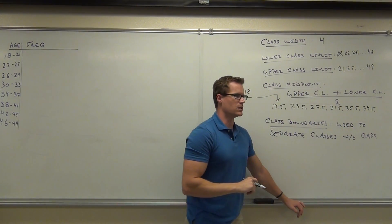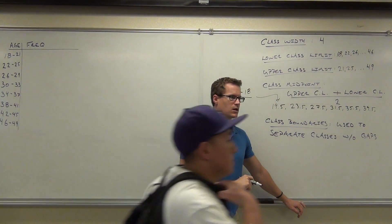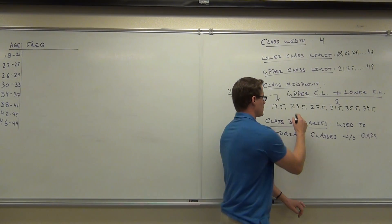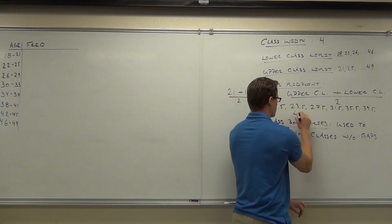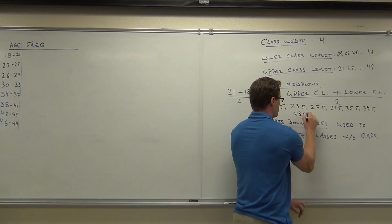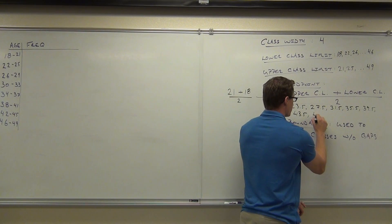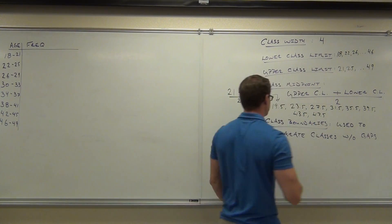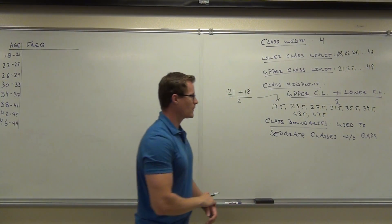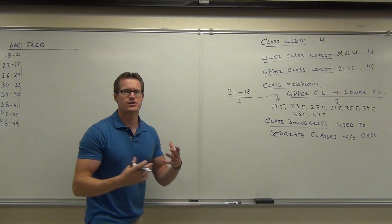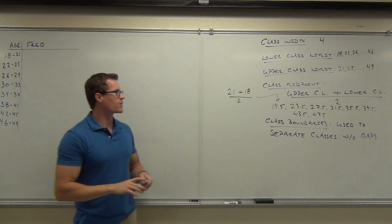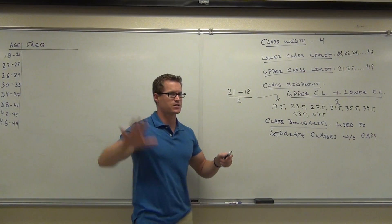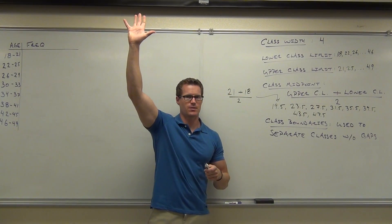We'll have 40. What's the next one? 43.5. And lastly, we'll have 47.5. And those are the values that are right in between each class. Raise your hand if you're okay on the lower class limits, upper class limits, and the class midpoints. Feel okay about that?